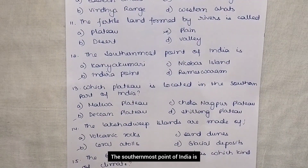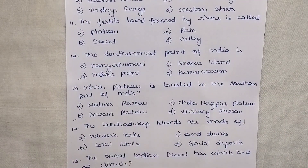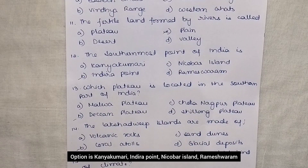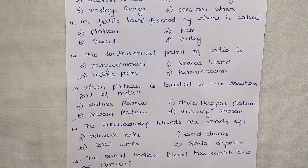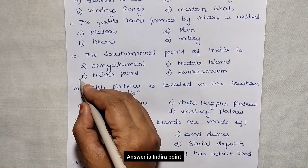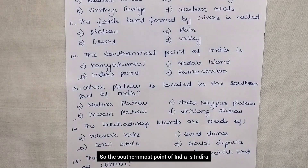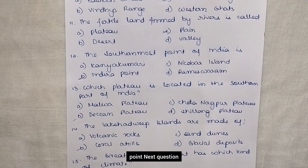The southernmost point of India is? The options are Kanyakumari, Indira Point, Nicobar Island, and Rameshwaram. Answer is Indira Point. So the southernmost point of India is Indira Point.